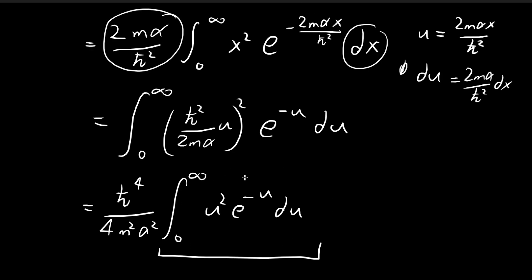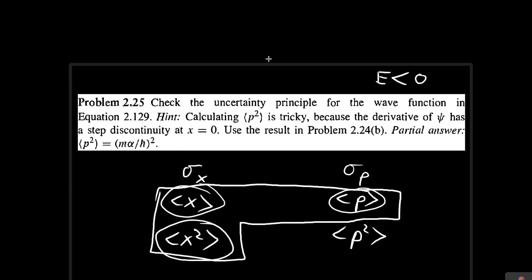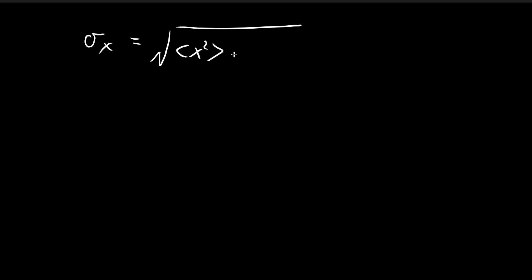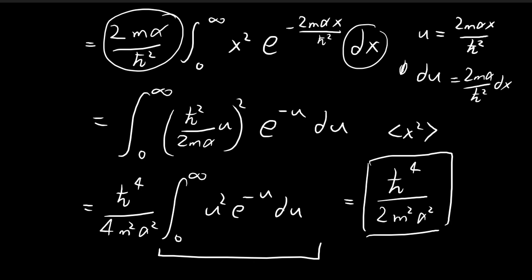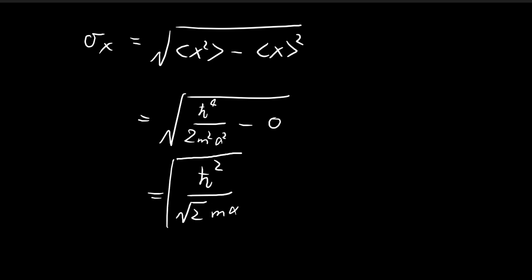Going back, the whole expression equals ℏ⁴/(4m²α²) times 2, giving an expected value of x squared equal to ℏ⁴/(2m²α²). We can now calculate the standard deviation of x: substituting in these values (⟨x²⟩ = ℏ⁴/(2m²α²) and ⟨x⟩ = 0), we get σ_x = ℏ²/√(2mα). That is the standard deviation of x.